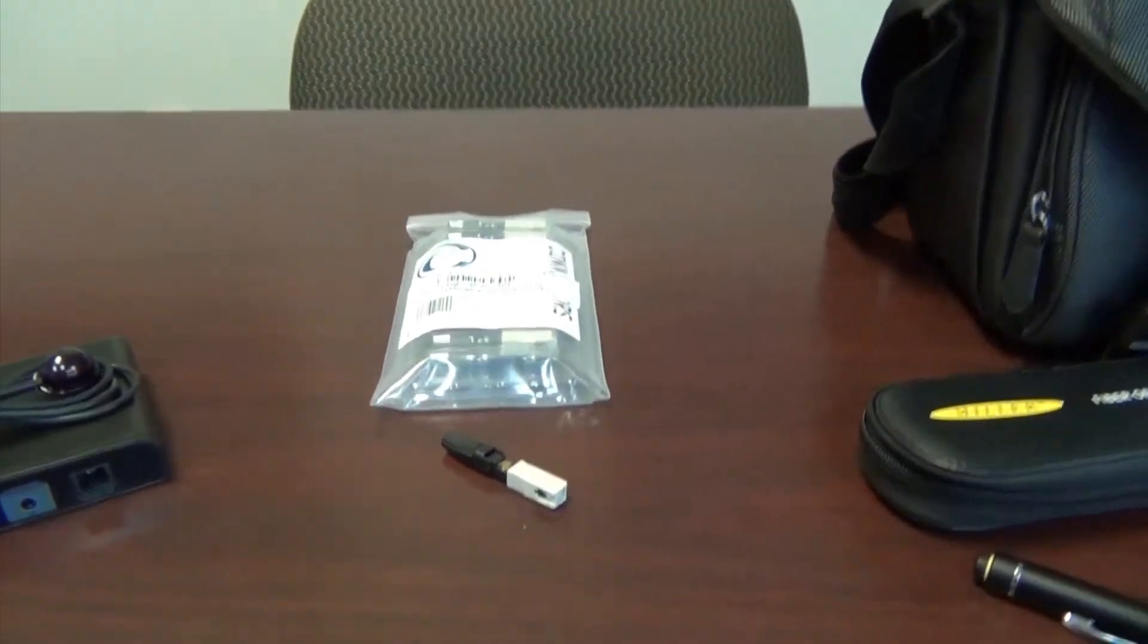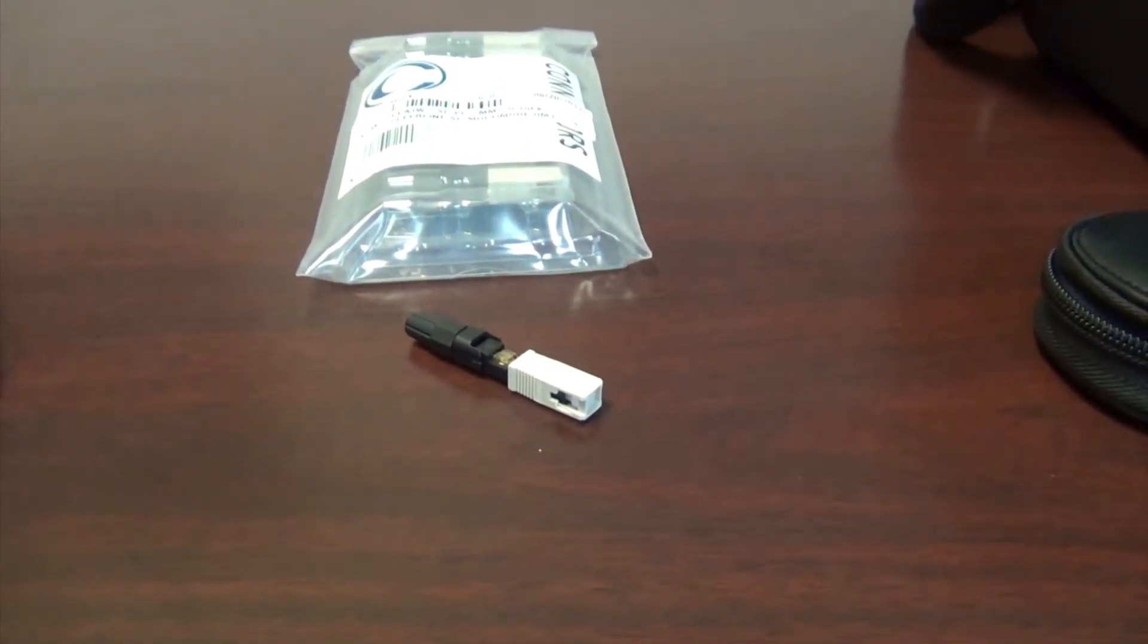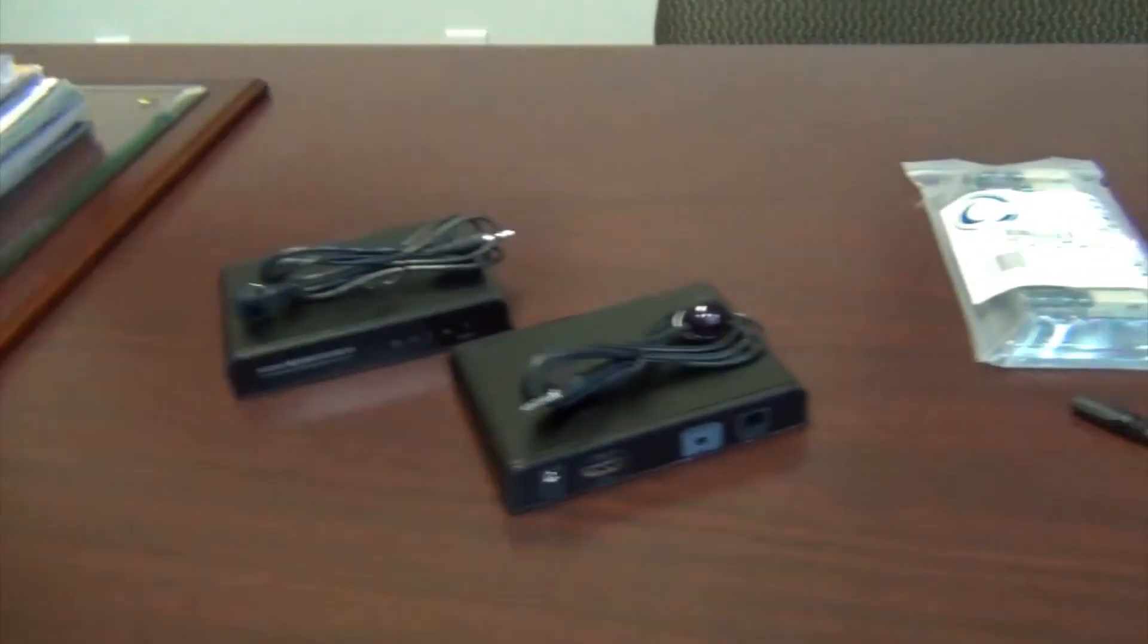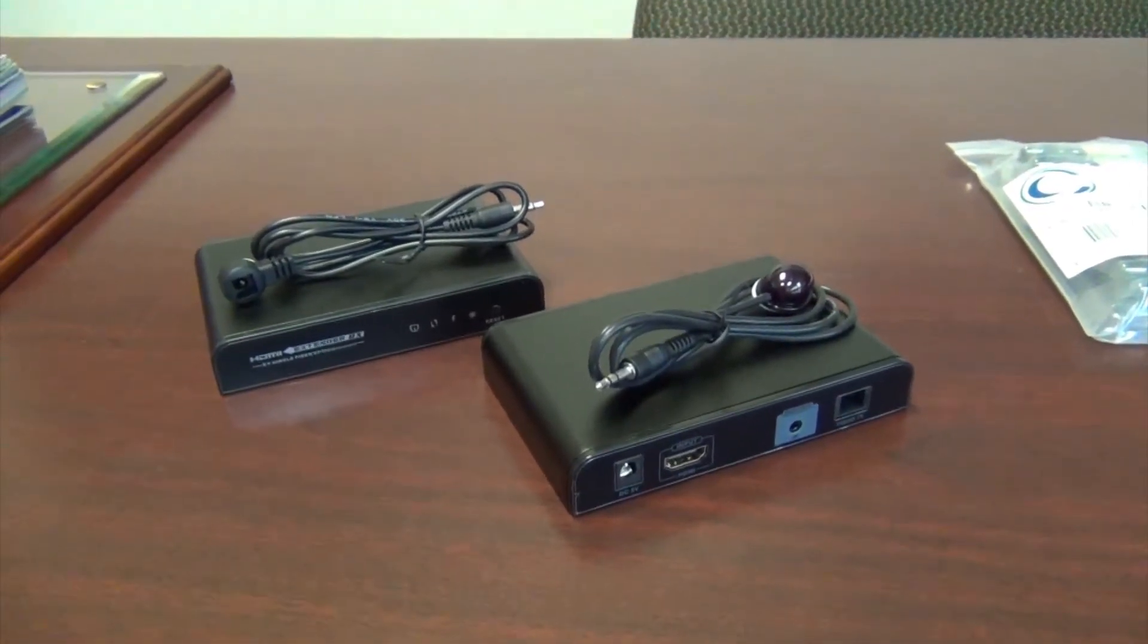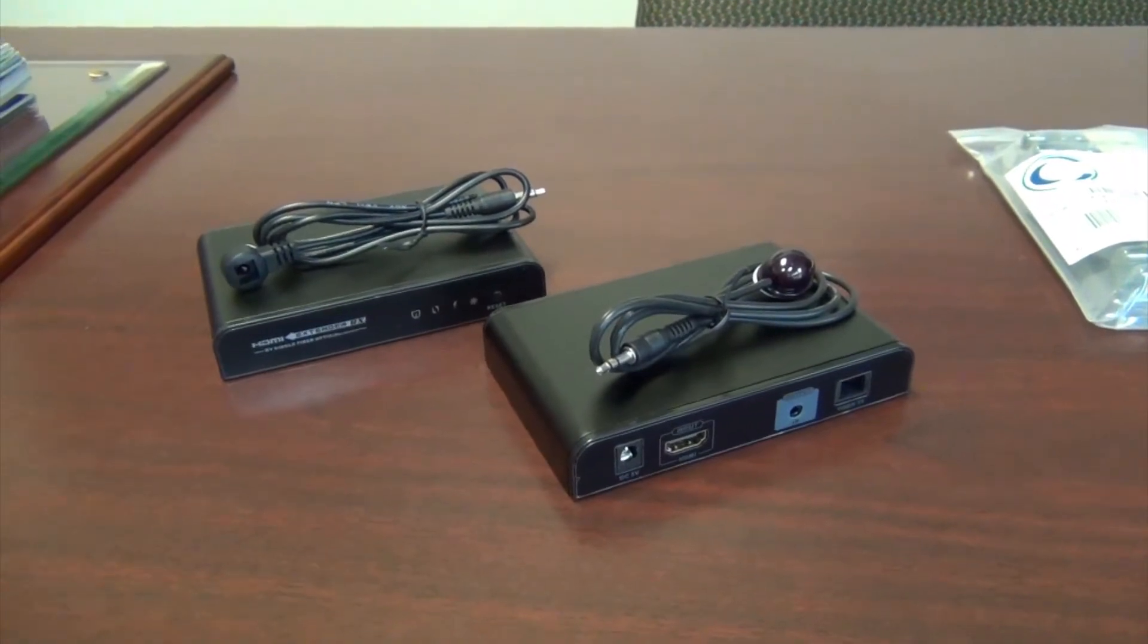The next thing we have is a clear line SC connector. This will be the plug that you'll terminate with and I'll show you a little bit more about later. The last thing we have here is actually direct connect. These are HDMI baluns. The fiber goes in and it can be converted to either IR or HDMI.